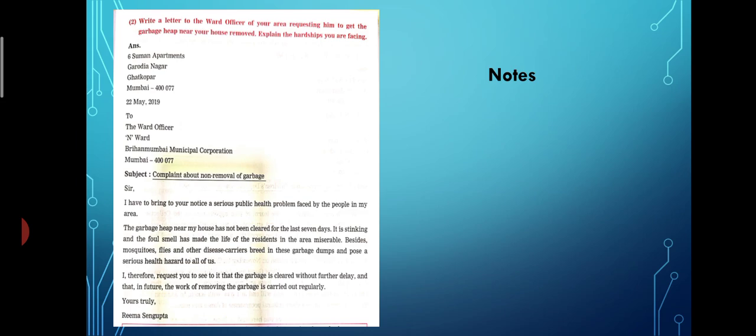Then you are going to leave a line. You can write 2, the ward officer, N-Ward, Brihan, Mumbai, Municipal Corporation, Mumbai, 400-077 is the pin code. Then you are going to write the subject complaint about non-removal of garbage. Then you are going to write, sir, and then you are going to put the comma.